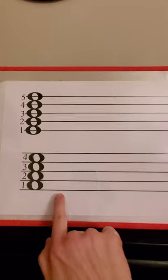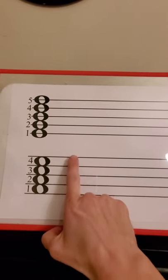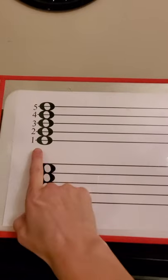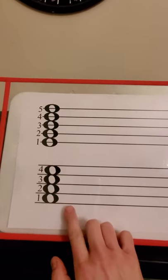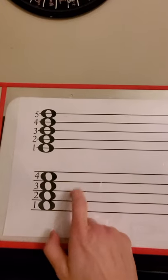So we have, starting from the bottom, we have one, two, three, four, five lines, as I have written out up here. We also have in between one, two, three, four spaces.